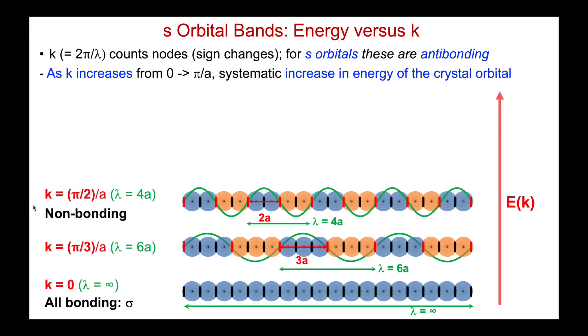We've already seen π over 2a corresponds to a non-bonding orbital, plus, plus, minus, minus. So higher energy.